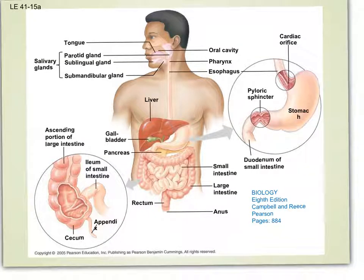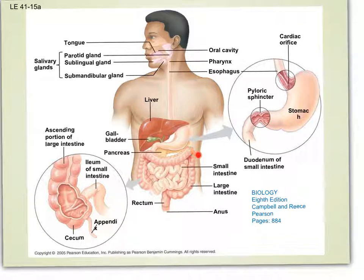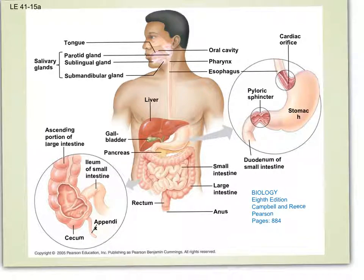This diagram shows the summary of the whole digestive system, starting from the mouth and going to the anus. From the mouth it goes to the esophagus, then the stomach, small intestine, and large intestine. It is supported by three glands: the liver, pancreas, and salivary glands.